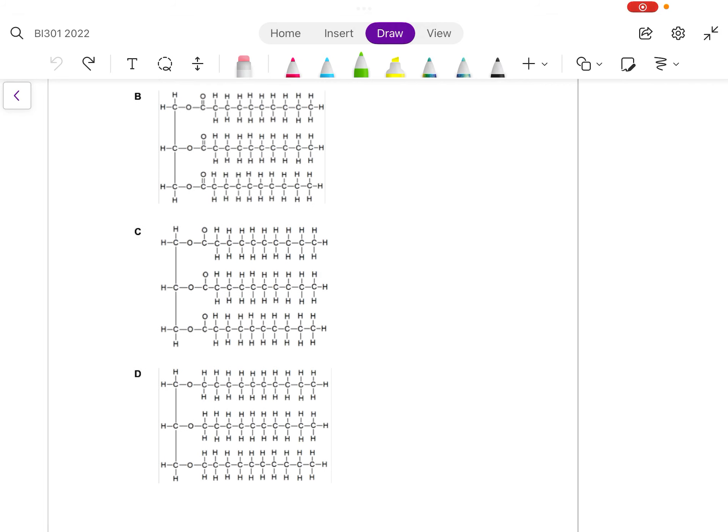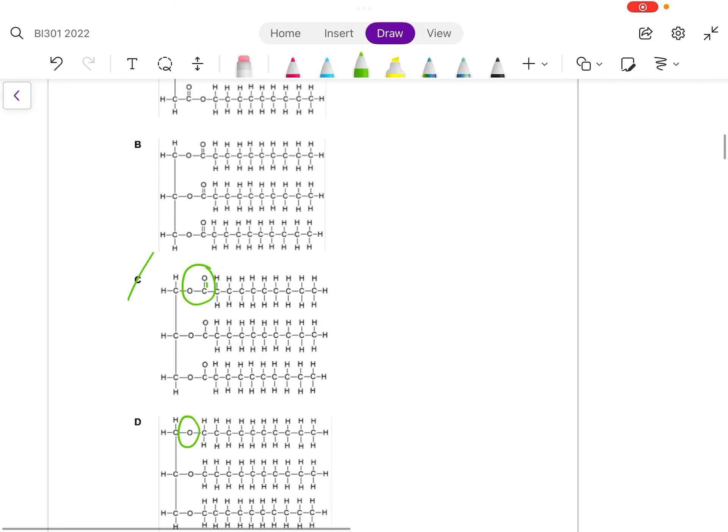Number one is C because when you look at this, this is not ester linkage - the O should be double bonded to a C. If you look at D, this is also not ester linkage. Ester linkage comes with two oxygens and one carbon.